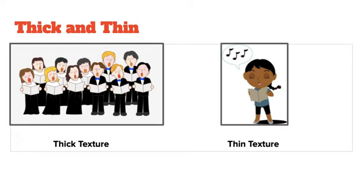Someone thought that if you add more players playing a part then it would be louder, and if you only have one or two it would be softer. So that applies to thick and thin texture as well. Thick texture is when you have many people playing the same part, and thin texture is when you have fewer people playing or singing the same part — just like the diagram shows you.